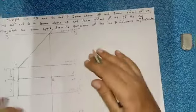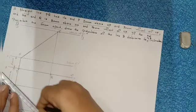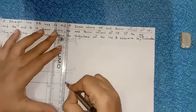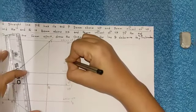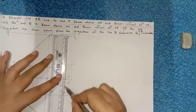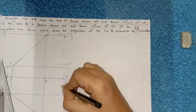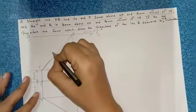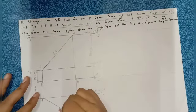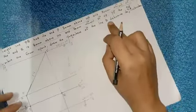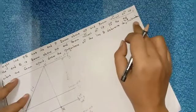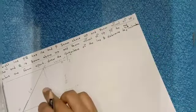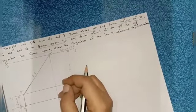This distance is 80mm and this distance is 70mm. This is your front view and this is your top view. In the question they ask to draw the projections — front view and top view — and determine true length and inclinations. You have to find true length and inclinations. This is your given data: 20mm above HP, 30mm in front of VP, 80mm above HP, 70mm in front of VP, distance between projectors is 60mm.